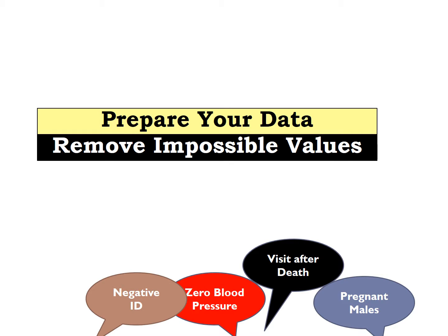Before you start to use the package, you need to prepare your data. One of the first things you should do is to remove all the impossible values. Sometimes in electronic health records, data entered for demonstration purposes usually have a negative ID. Sometimes missing values are indicated by zeros, so you will have something like zero blood pressure, which is not possible for a person who is alive. Sometimes you will have visits after the death date because the death date is entered wrong. There are also logical inconsistencies like pregnant males. Go through your data and make sure that you remove all the impossible values.